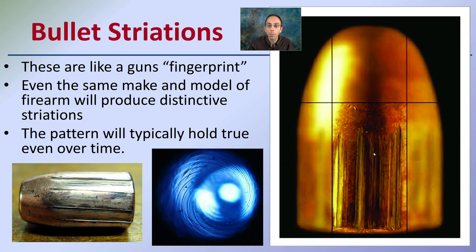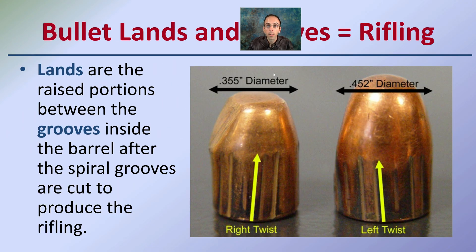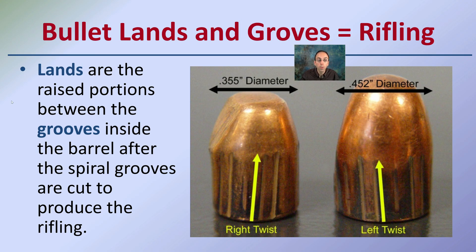Looking specifically at the bullet, there will be striations from the rifling in the barrel. These striations act as the gun's fingerprint — even the same make and model of firearm will produce distinct striations, and this pattern typically holds true over time. It's important that when you recover the bullet, you don't cause physical damage to it, because these distinctive striations are essentially the fingerprint of that gun. The lands are the raised portions between the grooves inside the barrel, and exactly how they're oriented or tilted can tell you if it's a right or left twist of that bullet, which helps match the barrel or firearm to the fired bullet.